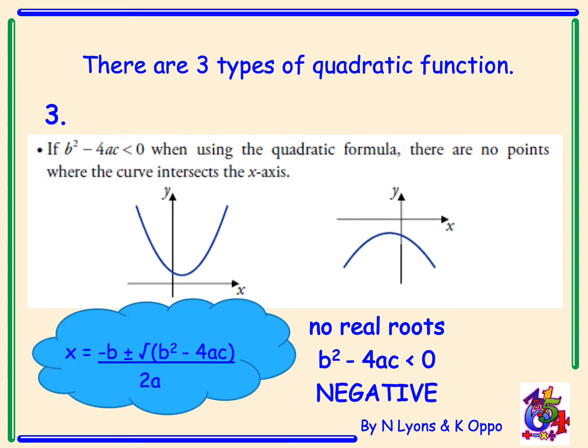The last type is when the discriminant is negative — a value less than zero. So if b squared minus 4ac is less than zero, when using the quadratic formula there are no points where the curve intersects the x-axis at all. That's because we can't take the square root of a negative number — it doesn't exist. When the discriminant is less than zero, the function has no real roots. It's either hovering above the x-axis or it's below the x-axis.